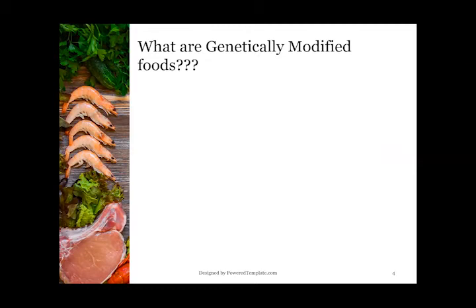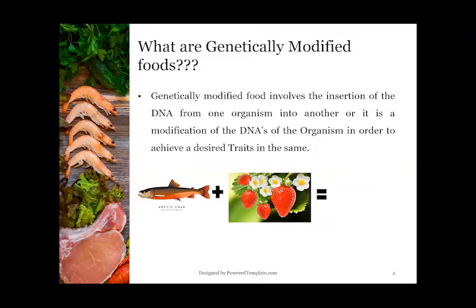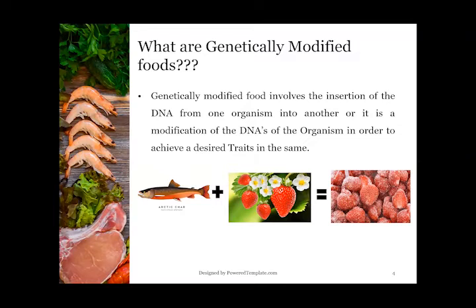Genetically modified foods involve the insertion of DNA from one organism into another, or a modification of the DNA of an organism in order to achieve a desired trait. For example, the DNA of an arctic fish is added into strawberries so as to help them sustain frost — hence, the strawberries can survive in frost as well.